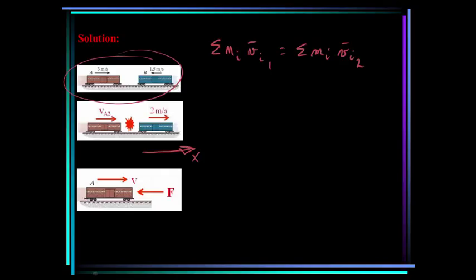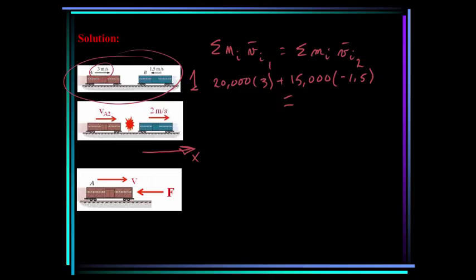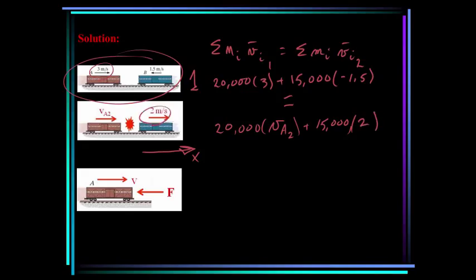We have two particles. Mass of A is 20,000 kg times its velocity of +3 m/s, plus mass of B which is 15,000 kg times −1.5 m/s (negative because it moves left) — that is state 1. This equals state 2: 20,000 kg times the unknown velocity of A, plus 15,000 kg times +2 m/s for car B. Solving for the velocity of A after collision gives 0.375 meters per second.